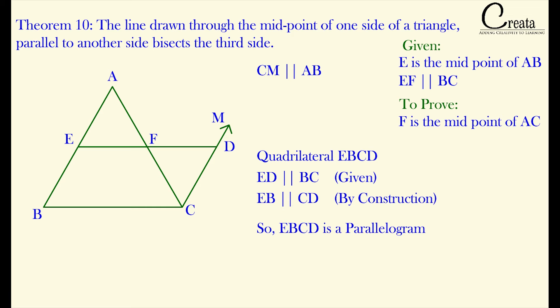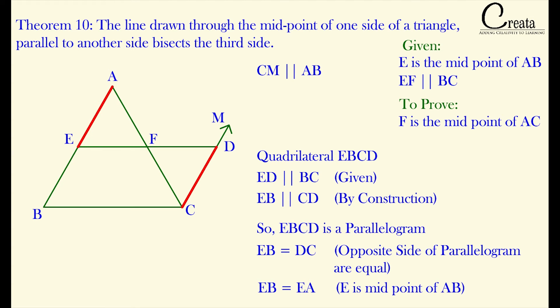And we know opposite sides of a parallelogram are equal. So EB is equal to DC. But it is given EB is equal to EA. E is the midpoint of AB. So we can say EA is equal to DC.